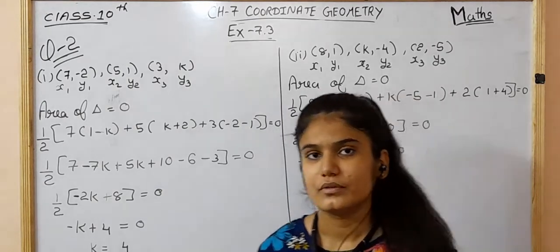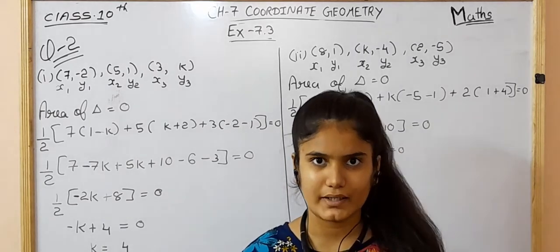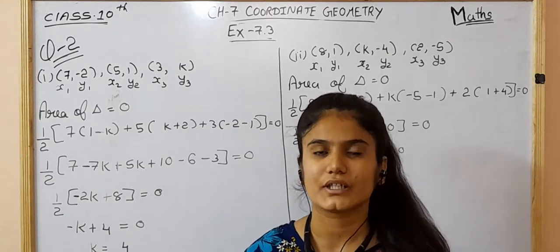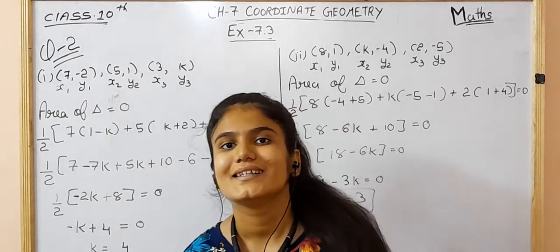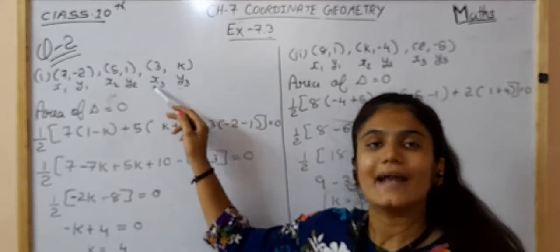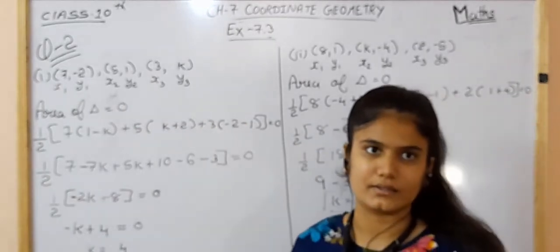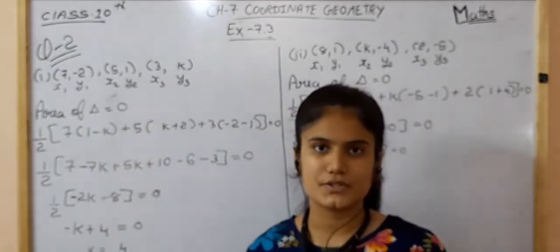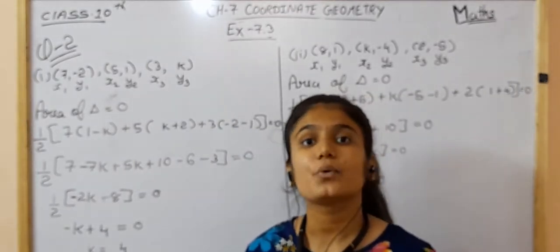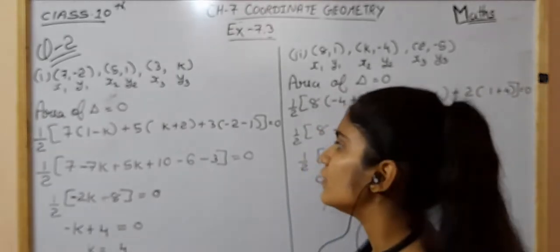In question number 2, we are told that three vertices given by coordinates are collinear with each other, and we have to find the missing value k. The vertices are given as (7, −2), (5, 1), and (3, k). We assign X1Y1, X2Y2, X3Y3. Since the points are collinear, the area of the triangle equals zero.